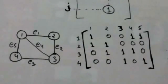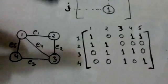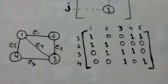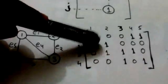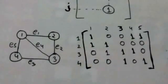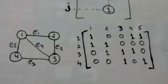In this graph, edge E1 joins vertex 1 and vertex 2. Therefore, in the incidence matrix of this graph, the entry at the first row and first column and the entry at the second row and first column are both one, and all other entries in the first column are zero.